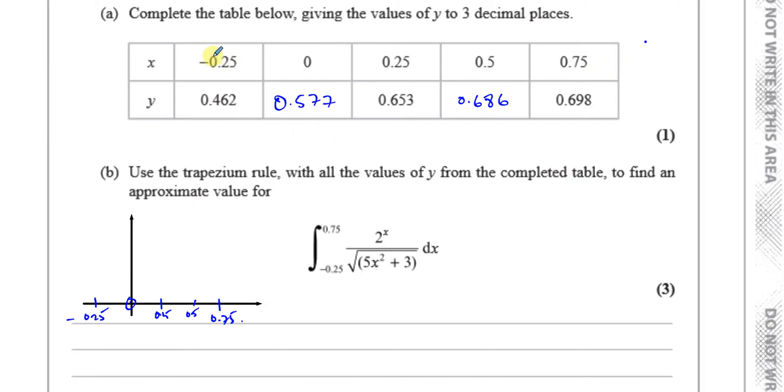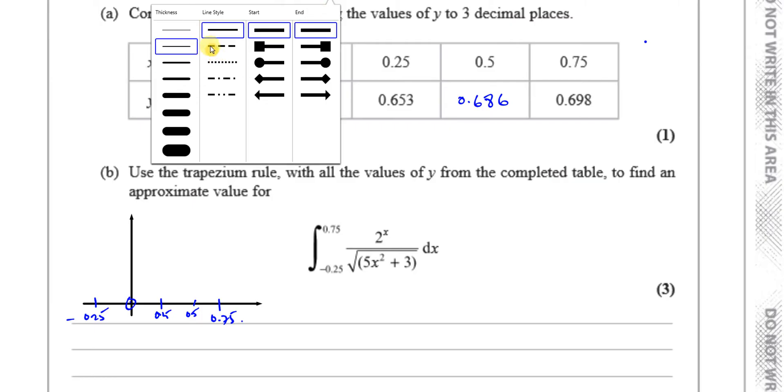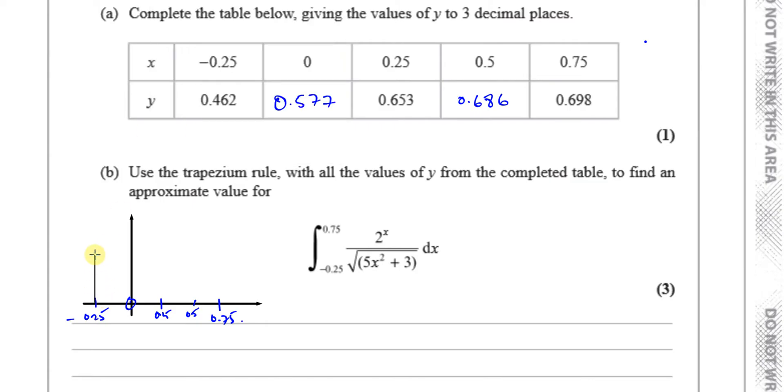Basically what we're going to be doing here is we're going to be making a series of trapeziums. There will be one trapezium up to 0.462, and the next one up to 0.577, and the next one 0.653, and the next one 0.686. You can see it's getting bigger. And the last one 0.698. So it's definitely going upwards, this type of shape.